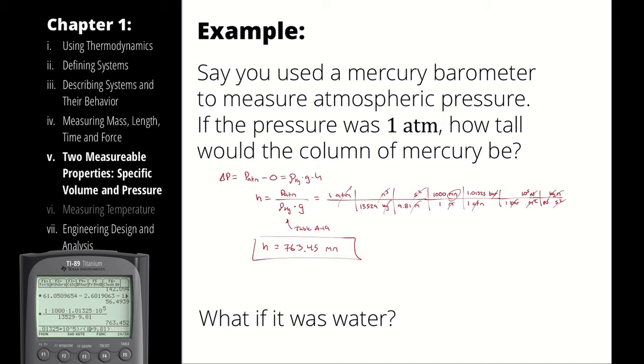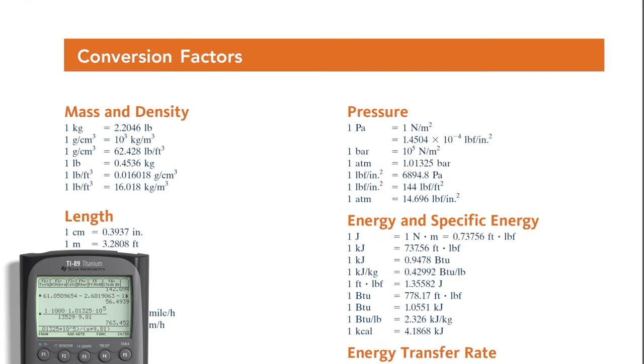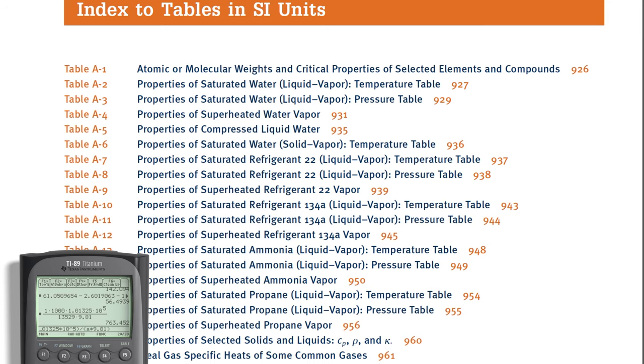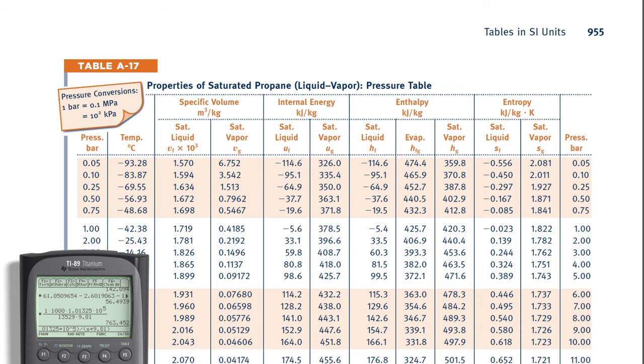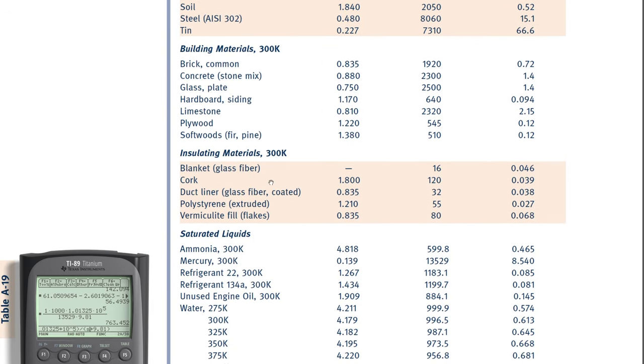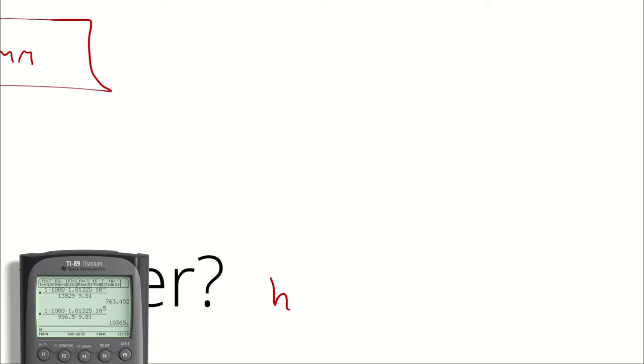Well, the only thing that's different here is the density of water. Instead of 13,529, we are going to grab the density of water at about standard temperature and pressure, which from table A19 is 996.5. We would need a column of water 10.4 meters tall.